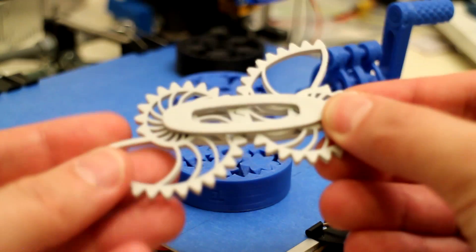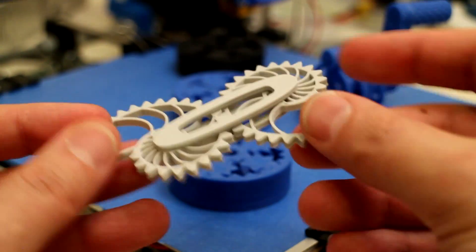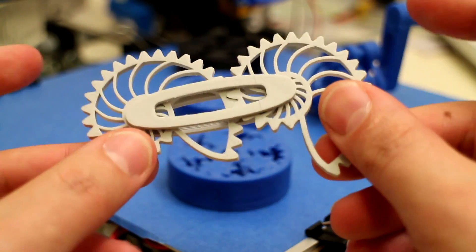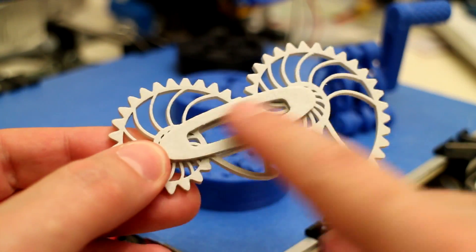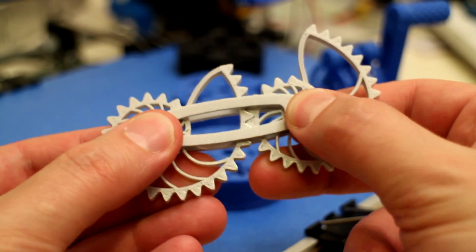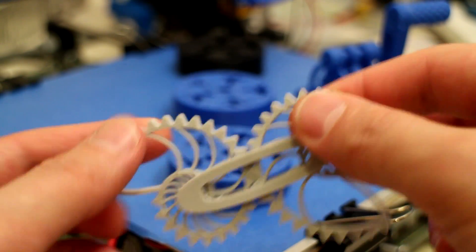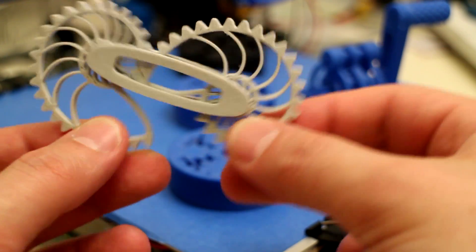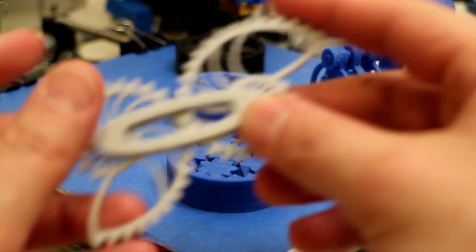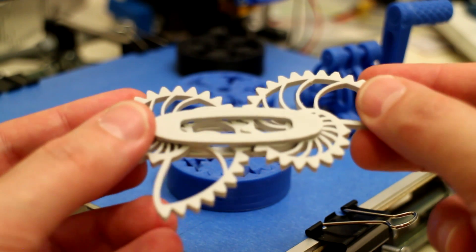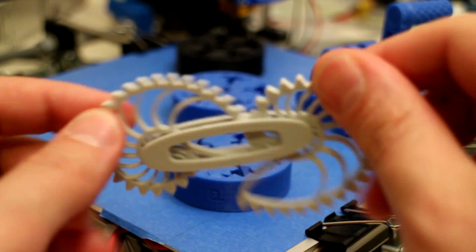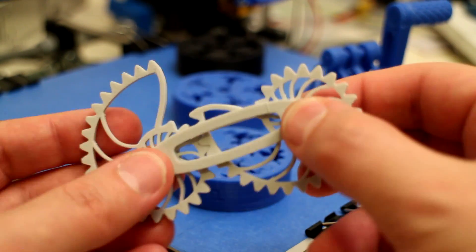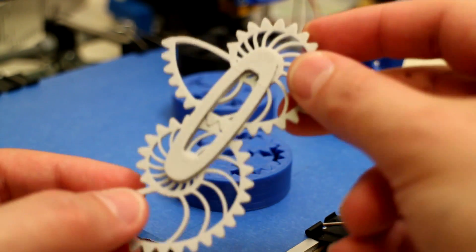First up we have this item which is called the Nautilus gears. This is four individual pieces, so we have two matching gears and a top and bottom locking pin. This is printed with PLA plastic, three perimeters, three top and bottom layers. This was a complete success first go with very minimal cleaning involved, so I was quite happy with the result.